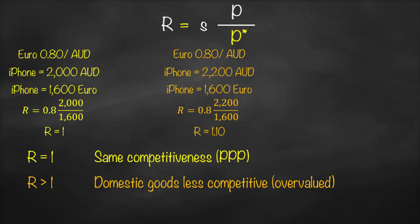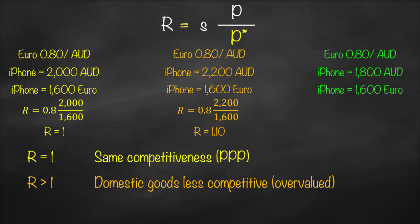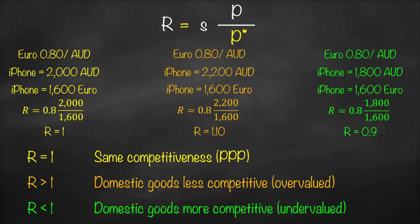Now let's look at another example where we decrease the price of the iPhone in Australia. We keep the same exchange rate of 0.8 euro per Australian dollar, the iPhone in Australia is 1,800 Australian dollars, and the iPhone in Italy is 1,600. Our real exchange rate is 0.8 multiplied by 1,800 divided by 1,600, giving R = 0.9. Since 0.9 is lower than our benchmark of one, this means our domestic goods are more competitive — relatively cheaper. Therefore, our currency is undervalued, and it's better to buy iPhones in Australia compared to Europe.